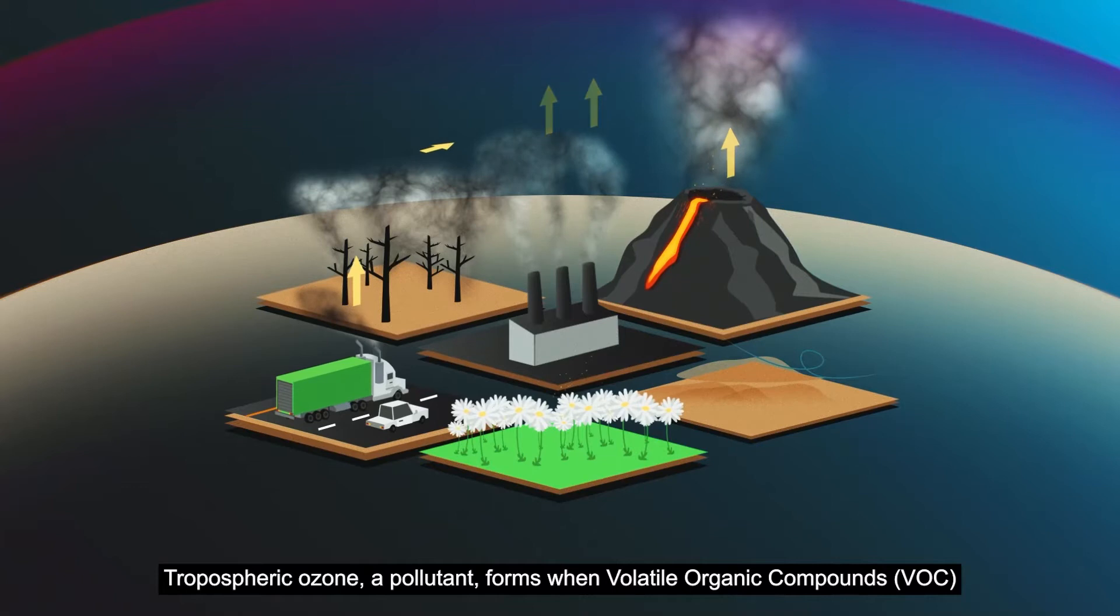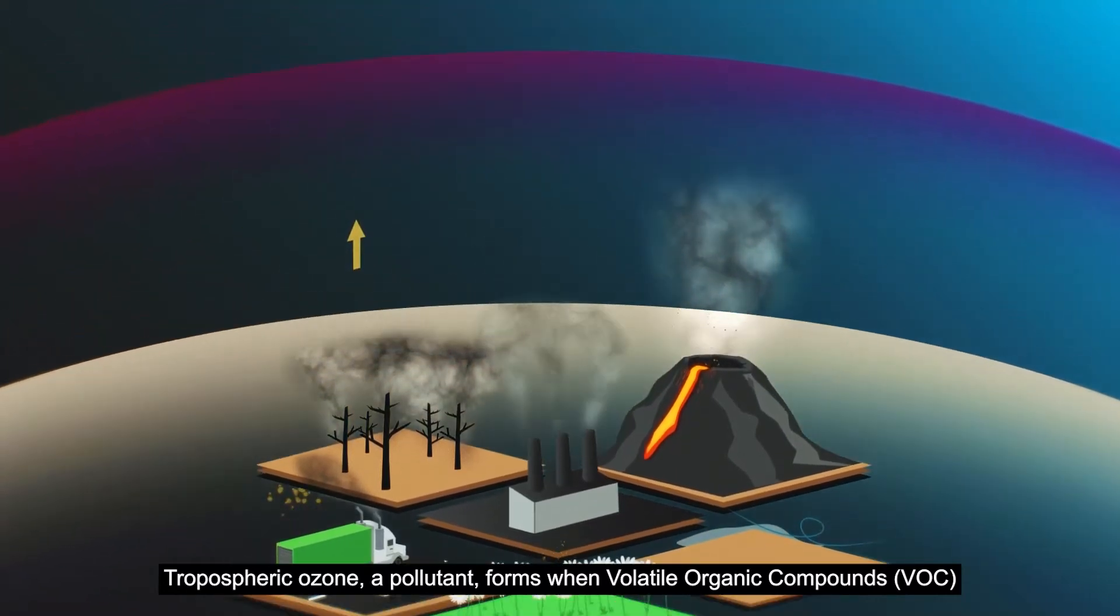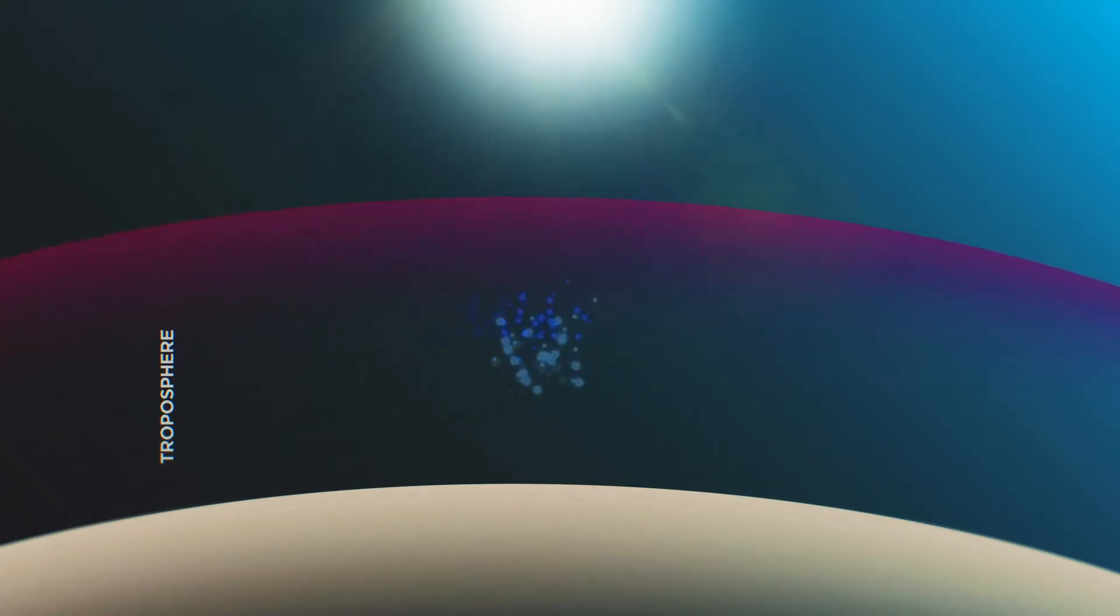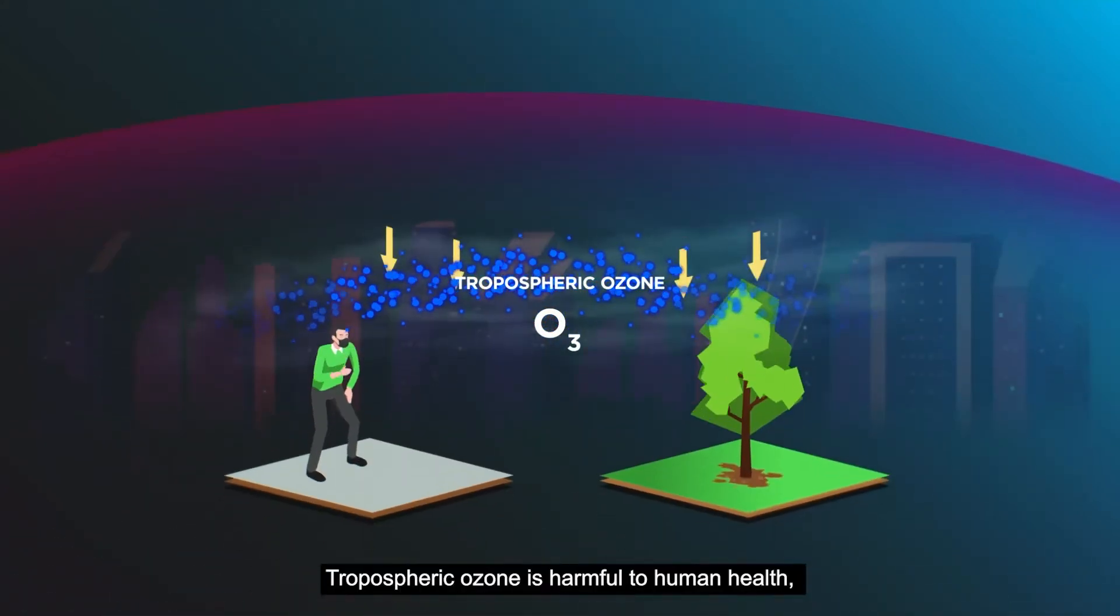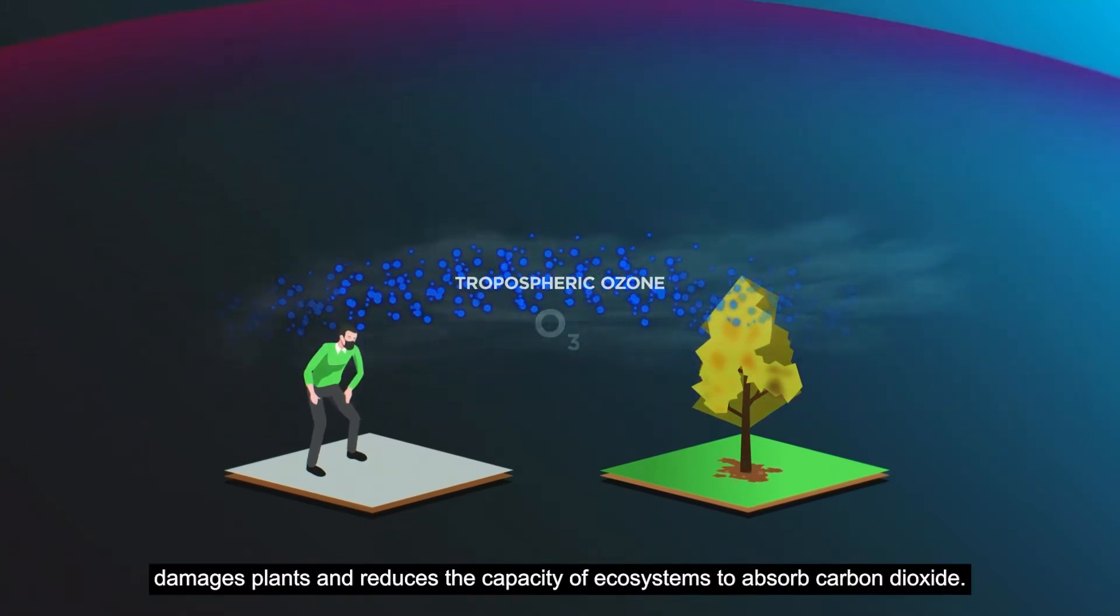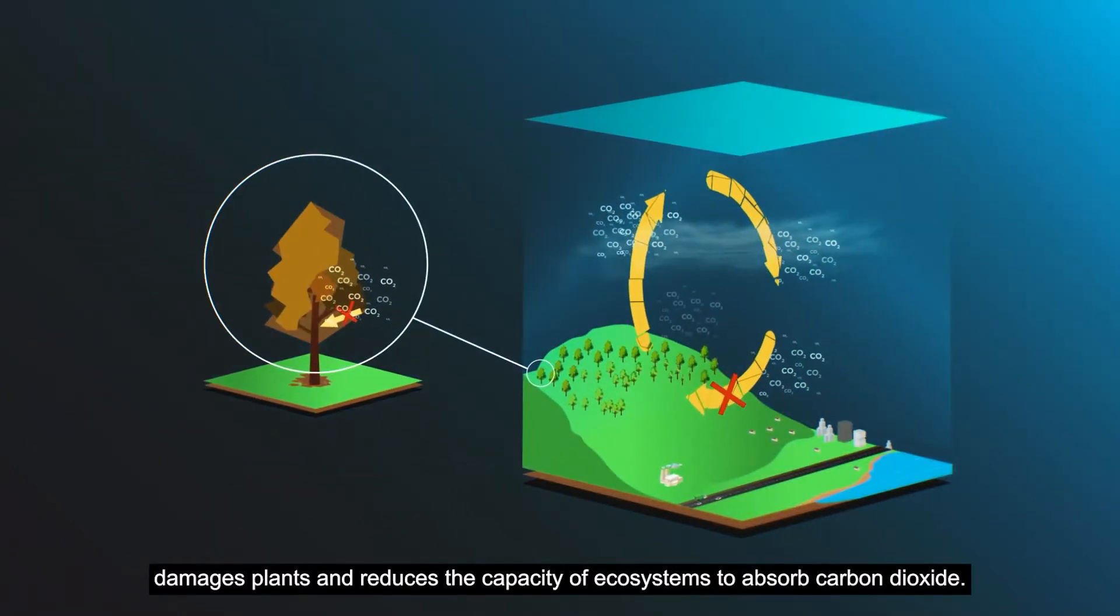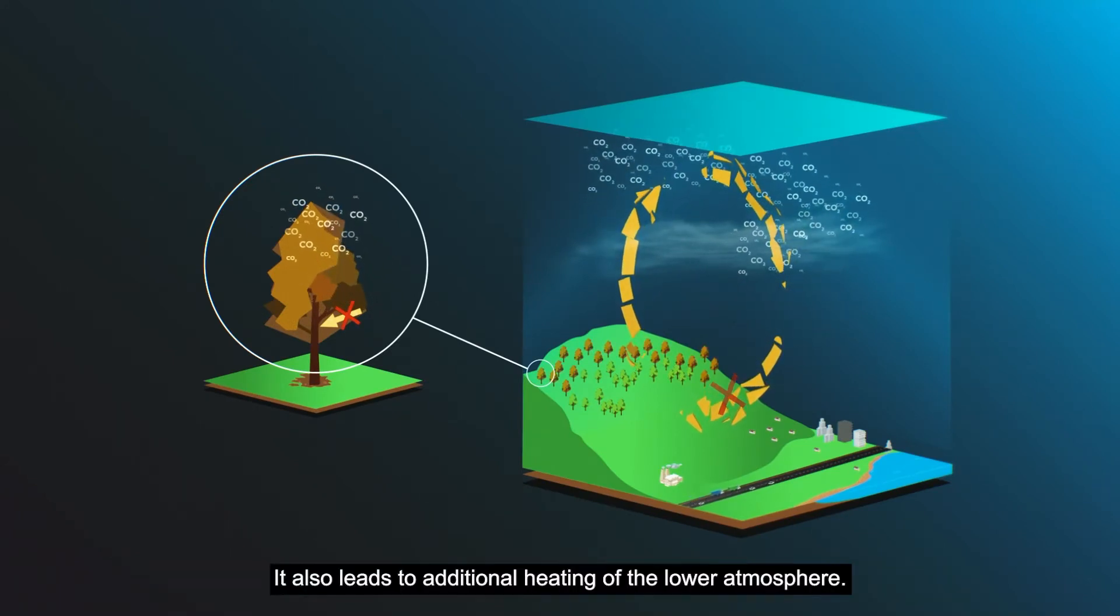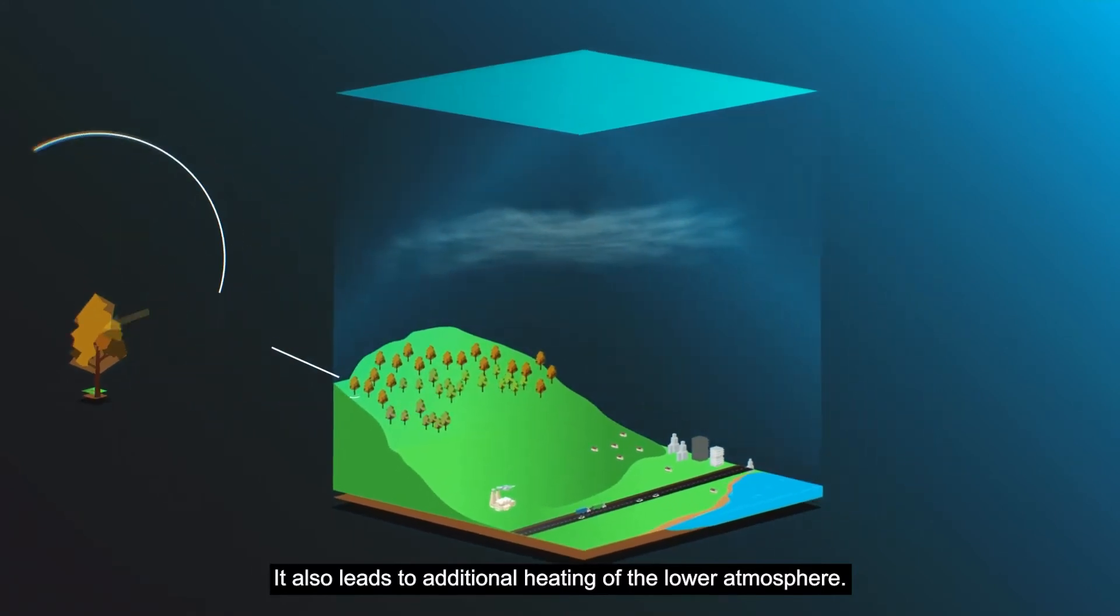Tropospheric ozone, a pollutant, forms when volatile organic compounds and nitrogen oxides react with each other in sunlight. Tropospheric ozone is harmful to human health, damages plants and reduces the capacity of ecosystems to absorb carbon dioxide. It also leads to additional heating of the lower atmosphere.